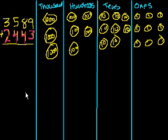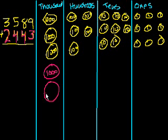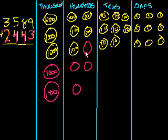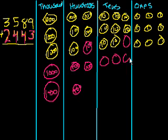Now let's do the 2,443. We have 2 thousands: 1,000, 2,000. Then 4 hundreds: 1, 2, 3, 4 — each of these are 100. Then 4 tens: 1, 2, 3, 4 — each of those are 10. And we have 3 ones: 1, 2, 3.